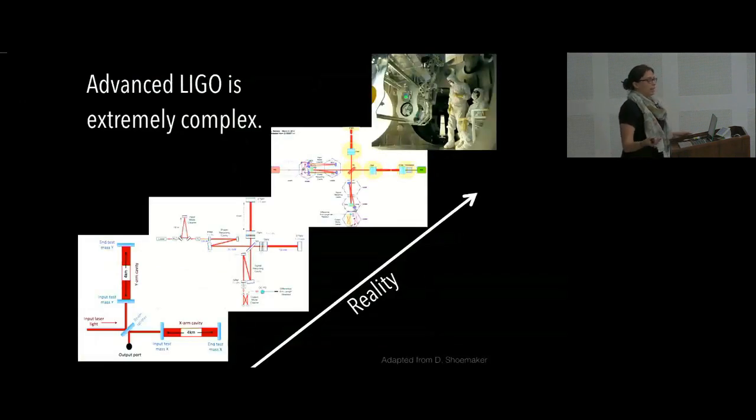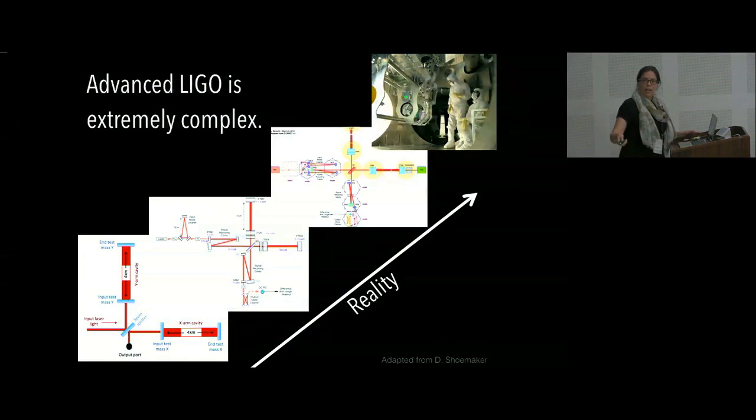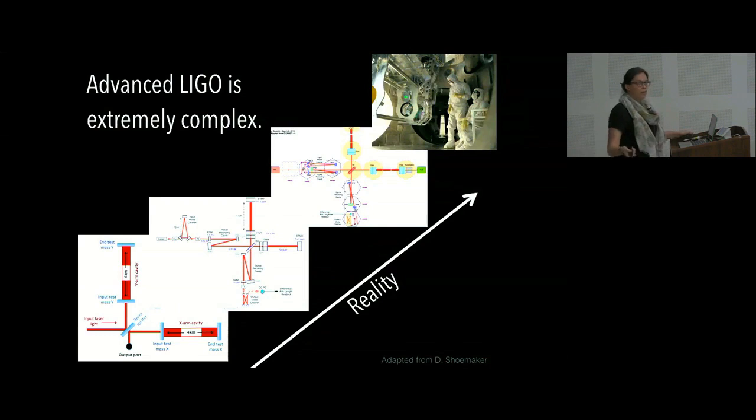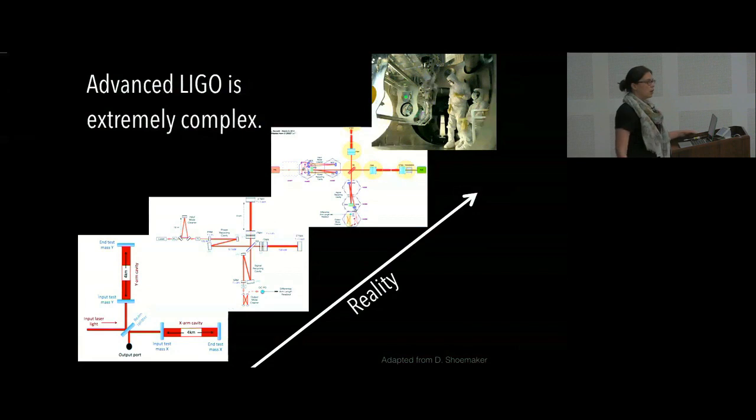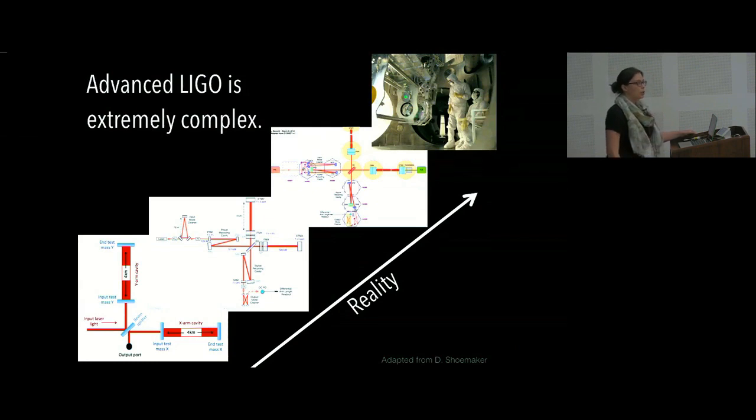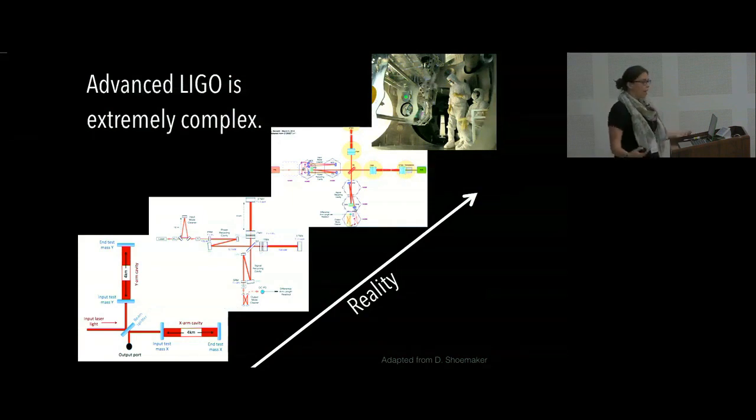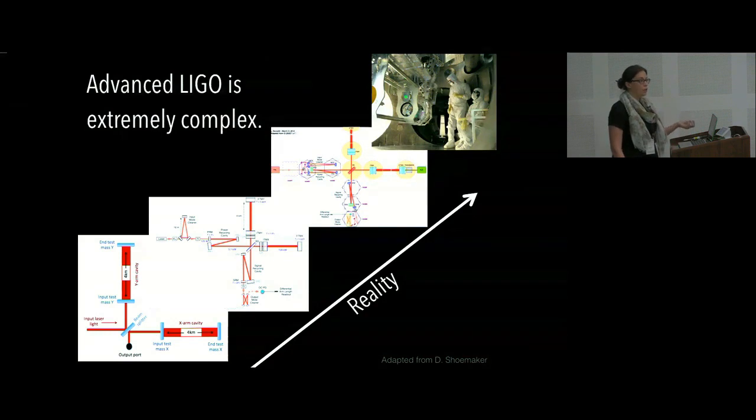But it's not really that simple. So this is on the scale of increasing reality. So this is the simplest picture that I could give. And then the actual reality is that there are dozens of photodiodes and optics. All of them are controlled sometimes by multiple independent control systems. And this is all, of course, installed by hand. So we're also thinking about vacuum contamination and the environment. And there are many different places for noise to couple into our gravitational wave signal.